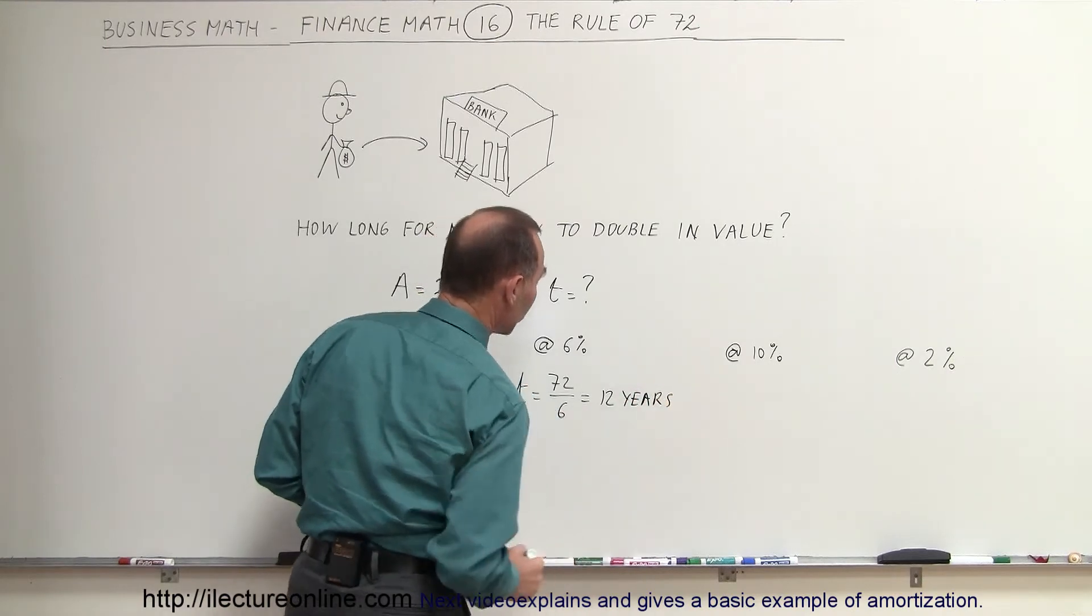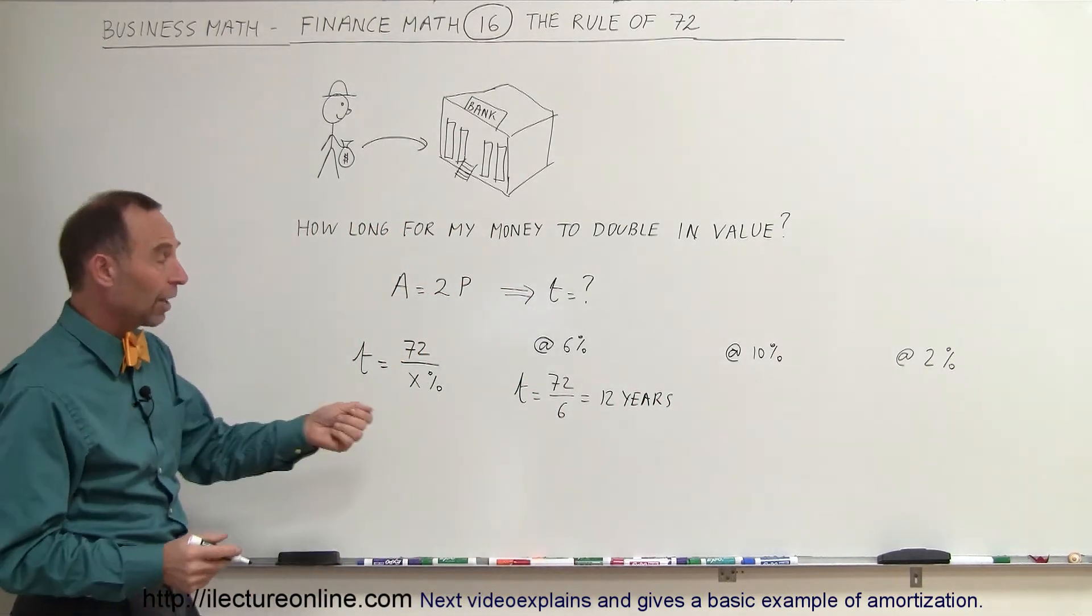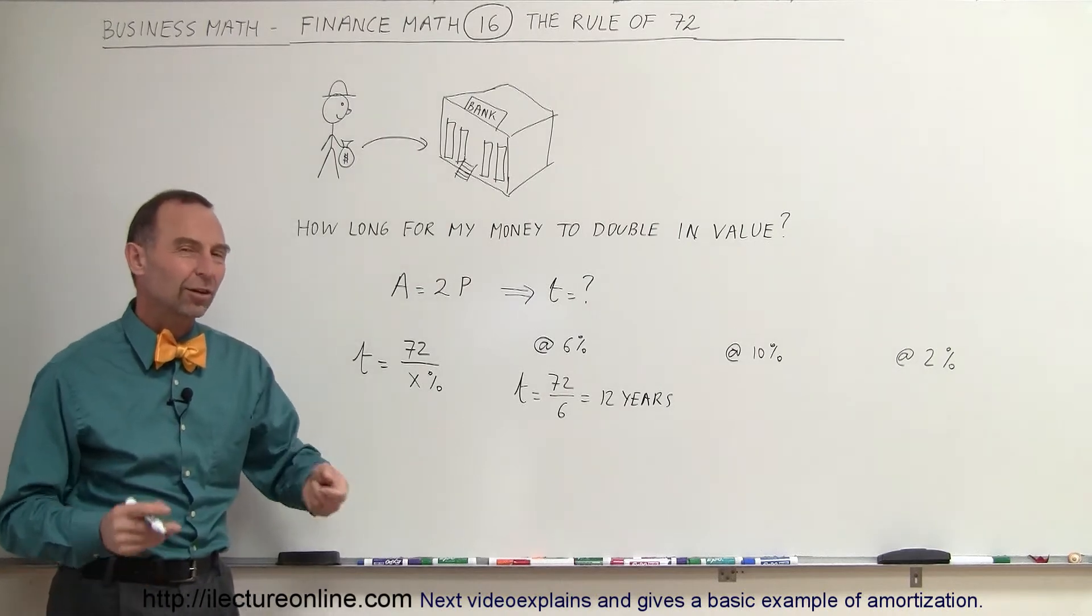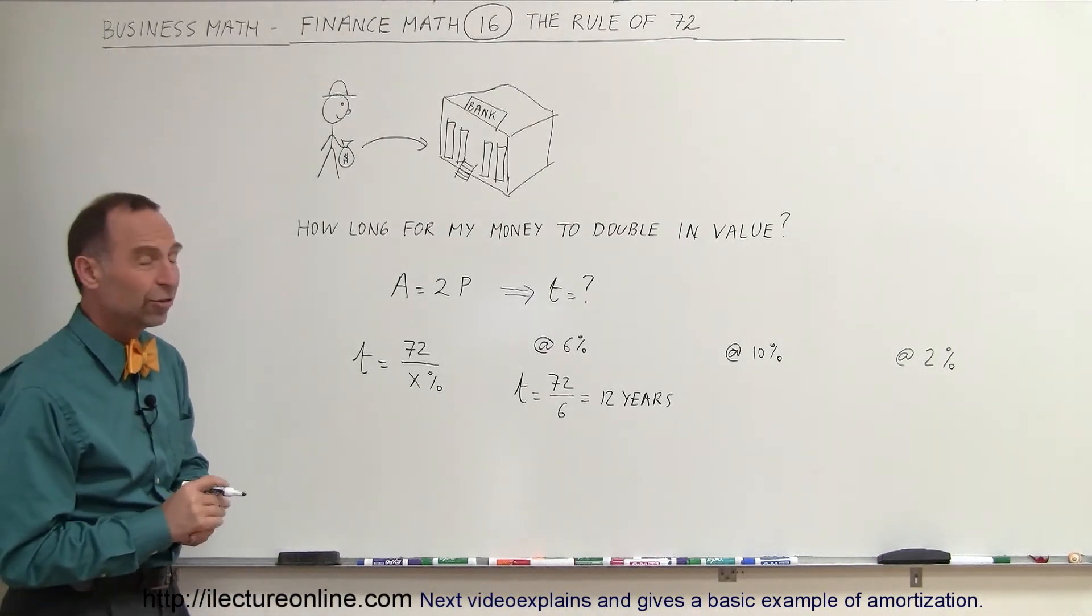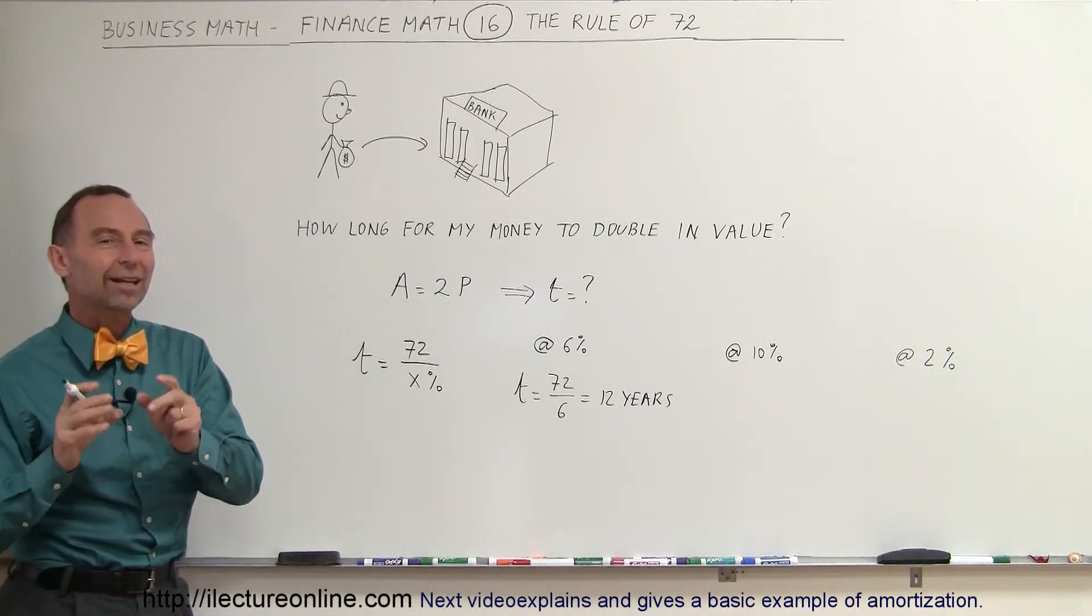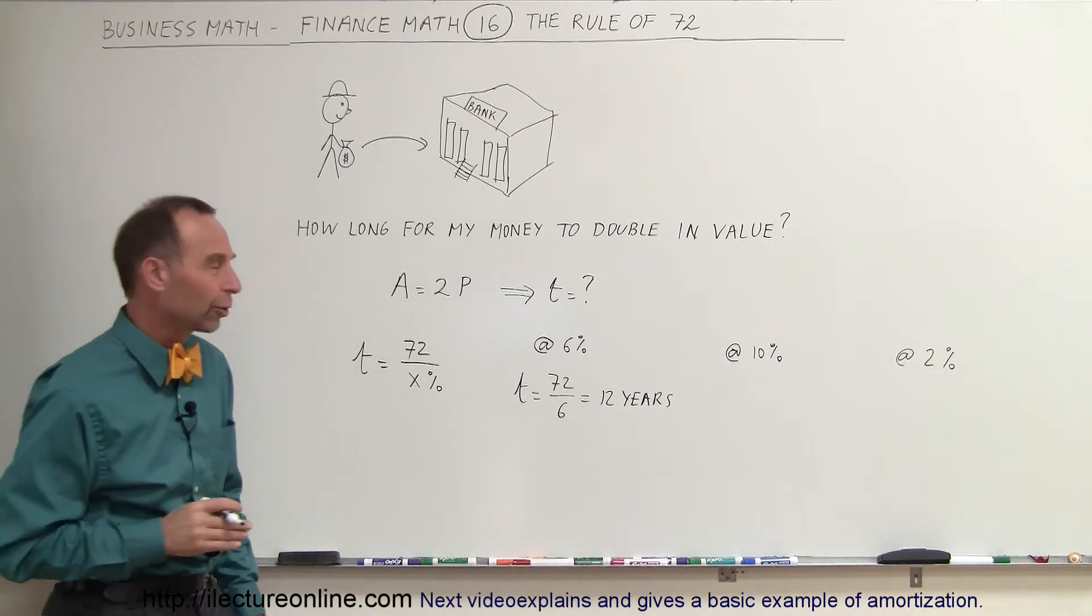At 6% interest, you can double your money in 12 years. You put $1,000 in the bank, 12 years later, it will be worth about $2,000. Of course, it's not an exact number, but it's close enough for a quick approximation.